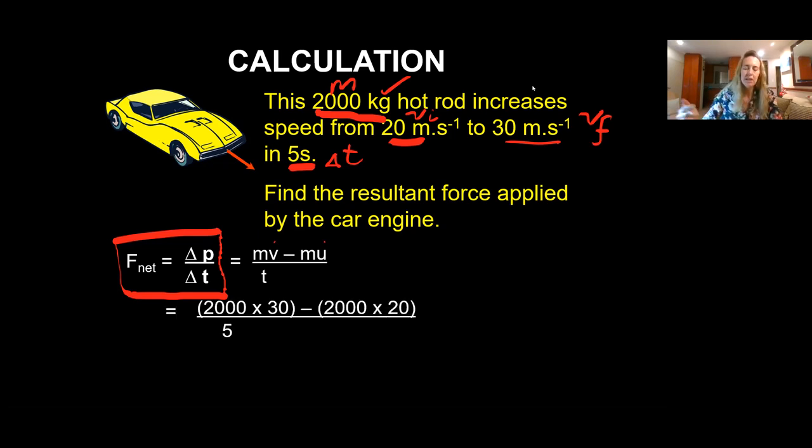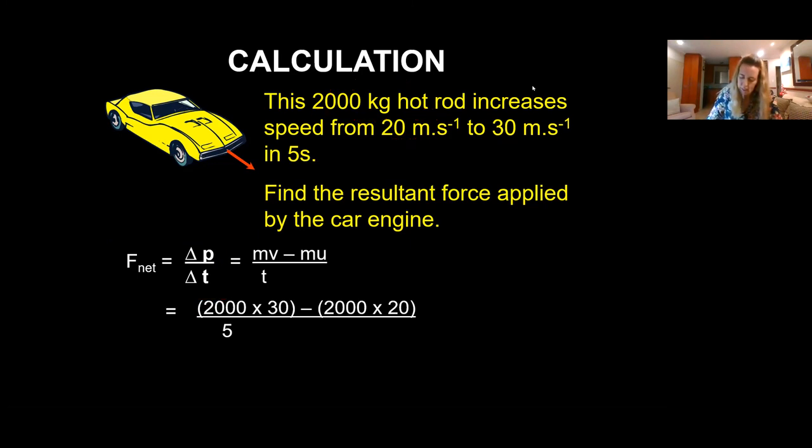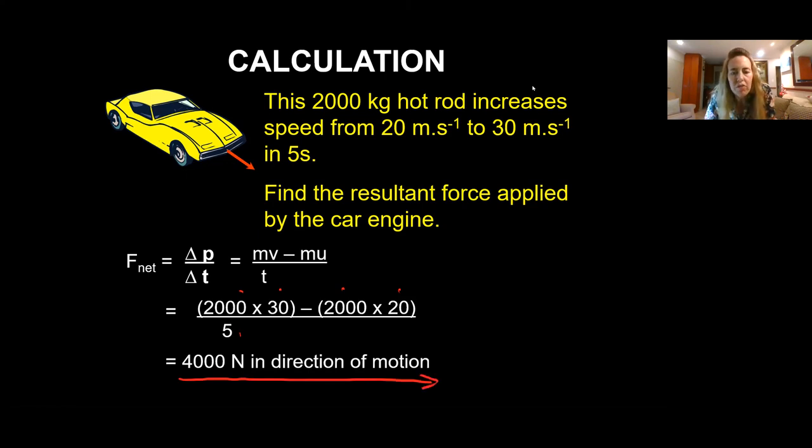I substitute my values in where mass is 2000 kilograms, velocity final is 30 meters per second. I subtract the mass of 2000 times the initial velocity of 20 meters per second, and I divide with five seconds. That gives me a final answer of 4000 newtons in the direction of motion, in the original direction of motion. And that is how you do these net force, including change in momentum calculations.